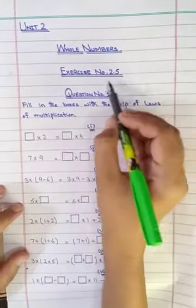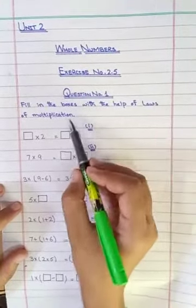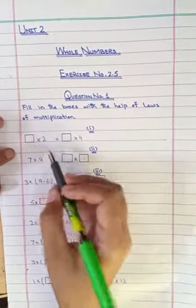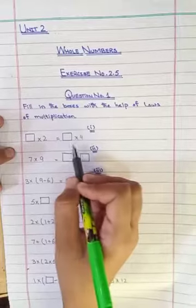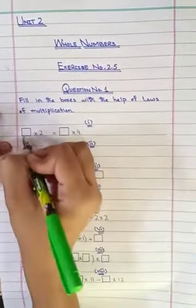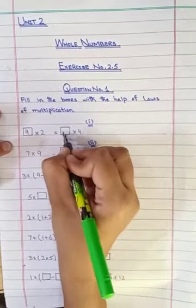In these laws, we will do exercise 2.5. We will write question number 2 in the boxes. We will write the multiplication law. 2 in this box multiply 2 and multiply 2. The box will multiply 4, so we will write the value as 4. And here we will write 2.